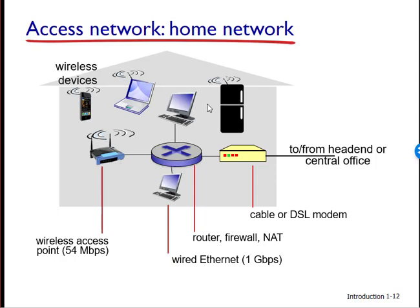While Ethernet and Wi-Fi access networks were originally found in corporate and university networks, they have recently become relatively common components of home networks. Increasingly, devices such as iPhones and Android devices are being used to send email, surf the web, tweet, search Facebook, and download music while on the run. These devices employ the same wireless infrastructure used for cellular telephony to send and receive packets through a base station operated by the cellular network provider. Unlike Wi-Fi, a user need only be within a few miles, as opposed to a few feet, of the base station.